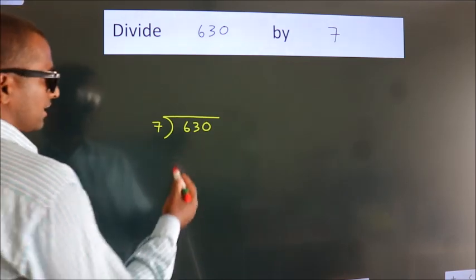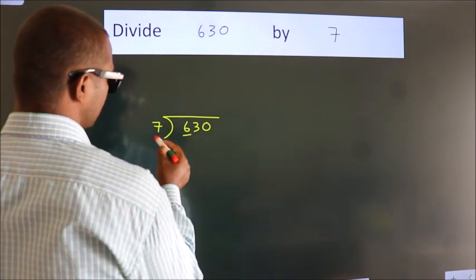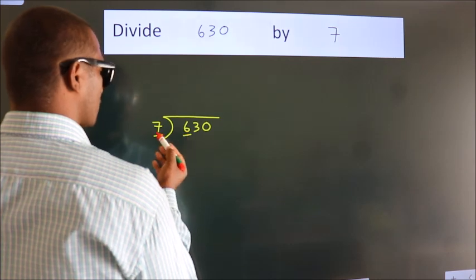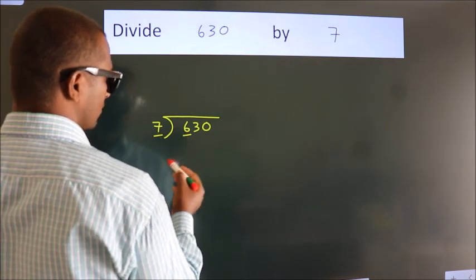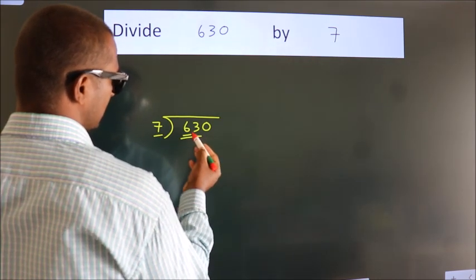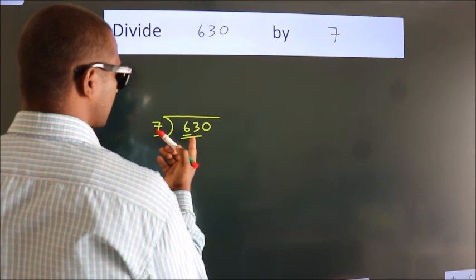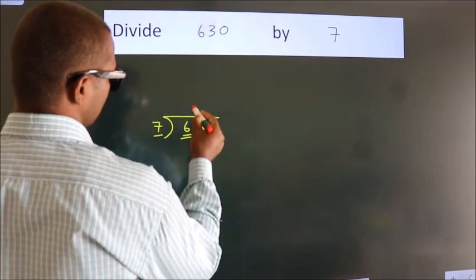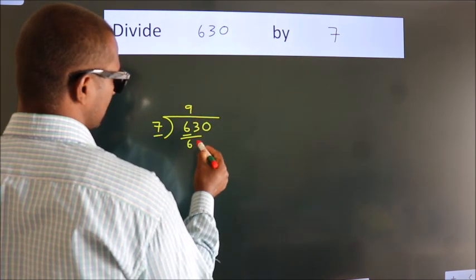Next. Here we have 6, here 7. 6 smaller than 7. So we should take 2 numbers, 63. When do we get 63? In 7 table. 7 nines, 63.